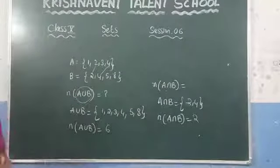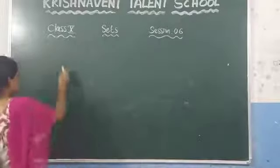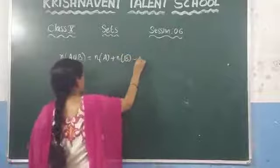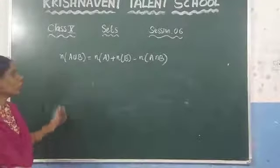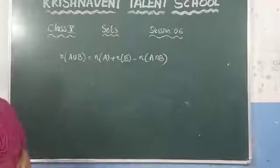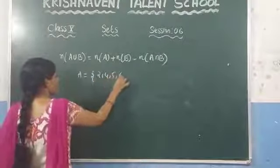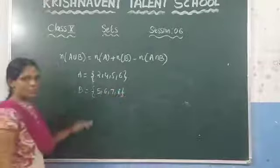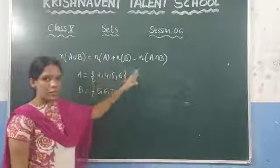This is very important. The relation is: N(A ∪ B) is always equal to N(A) + N(B) − N(A ∩ B). They will give some sets and ask you to prove that N(A ∪ B) = N(A) + N(B) − N(A ∩ B). Let us consider two sets to verify: A = {2, 4, 5, 6} and B = {5, 6, 7, 8}.